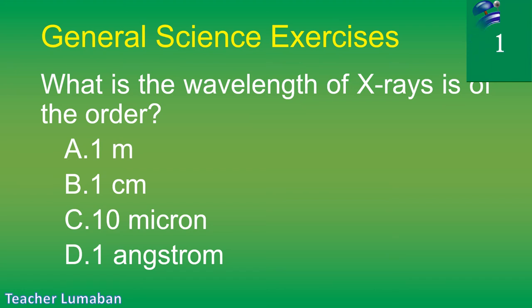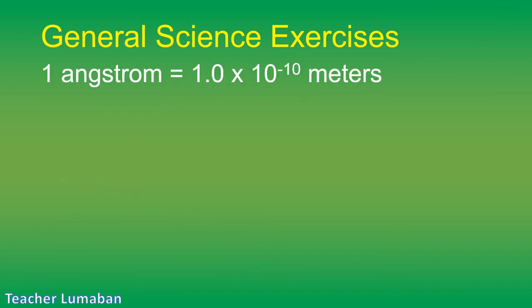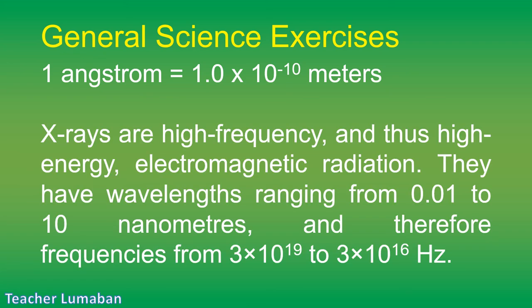The correct answer is Letter D: 1 angstrom. 1 angstrom equals 1.0 × 10⁻¹⁰ meters. X-rays are high frequency, and thus high energy, electromagnetic radiation. They have wavelengths ranging from 0.01 to 10 nanometers, and therefore frequencies from 3 × 10¹⁹ to 3 × 10¹⁶ hertz.